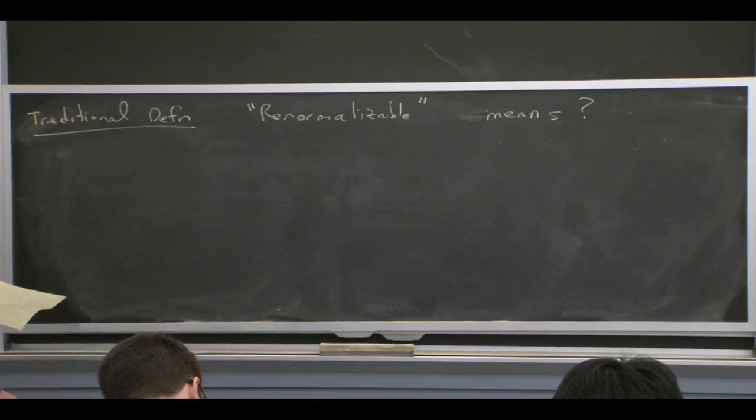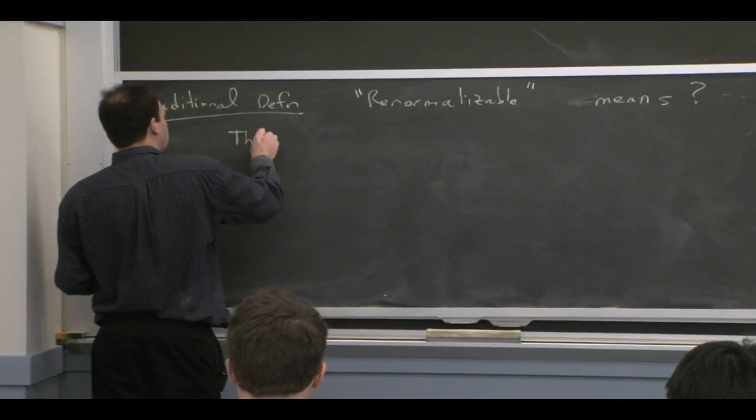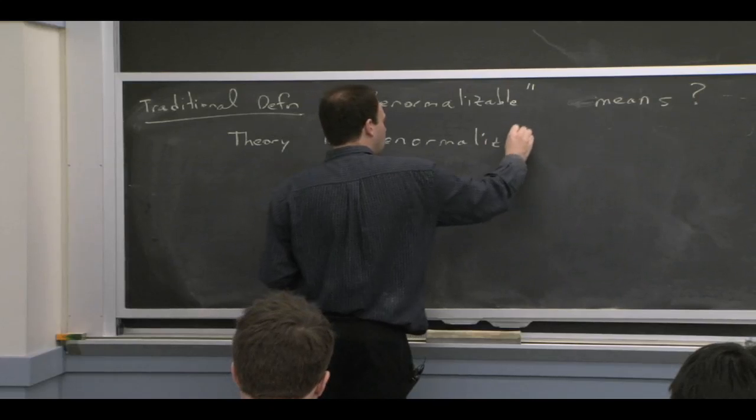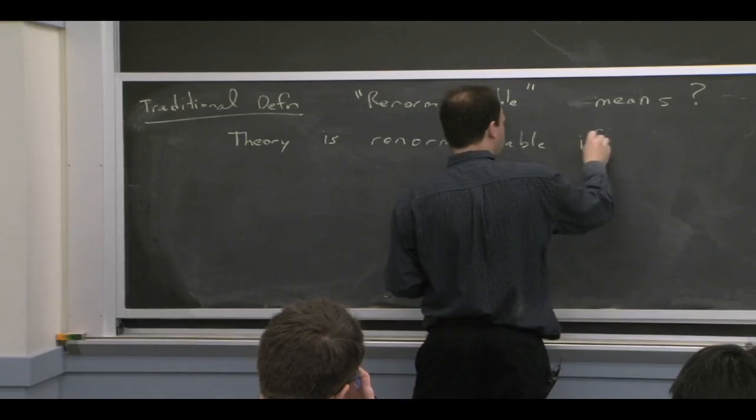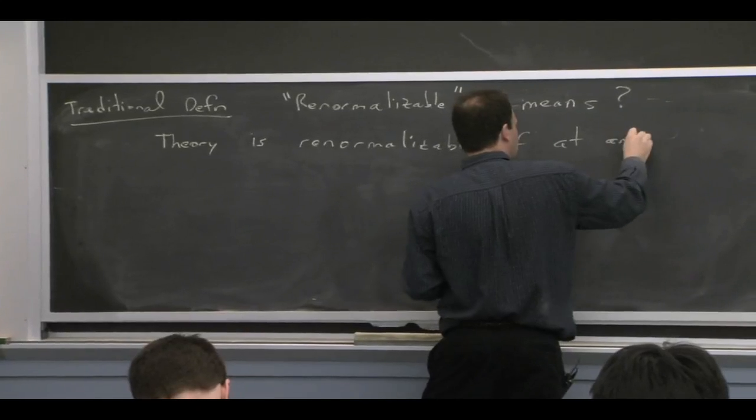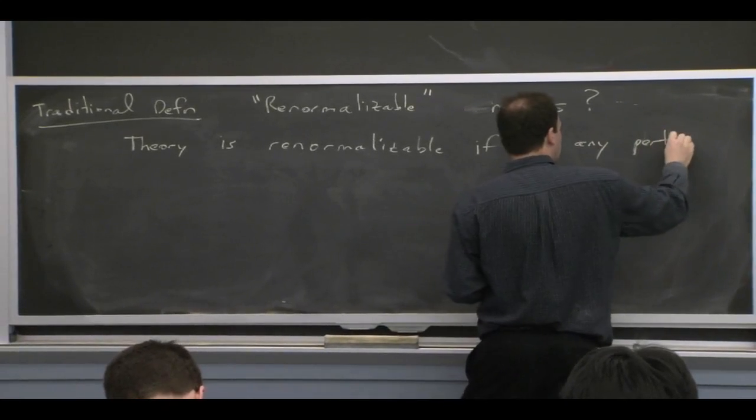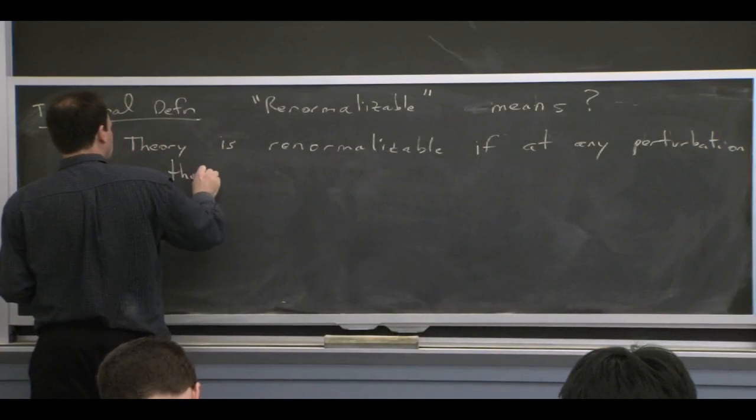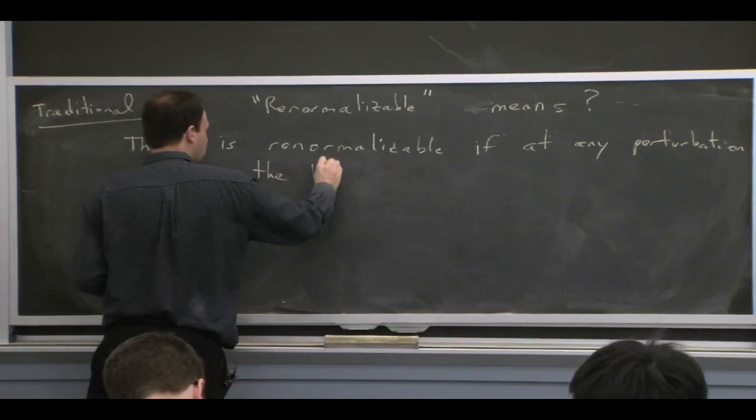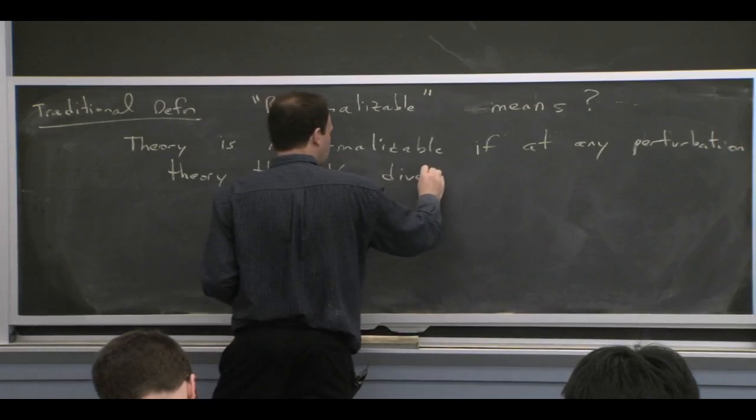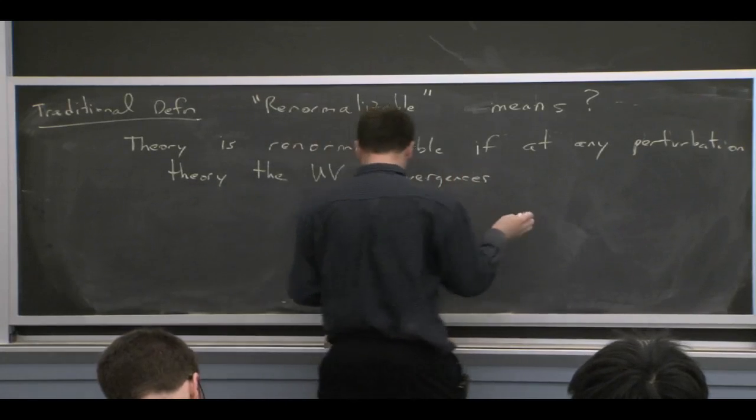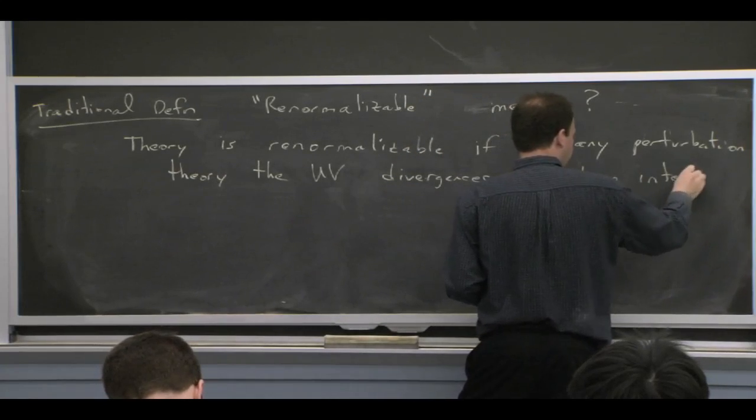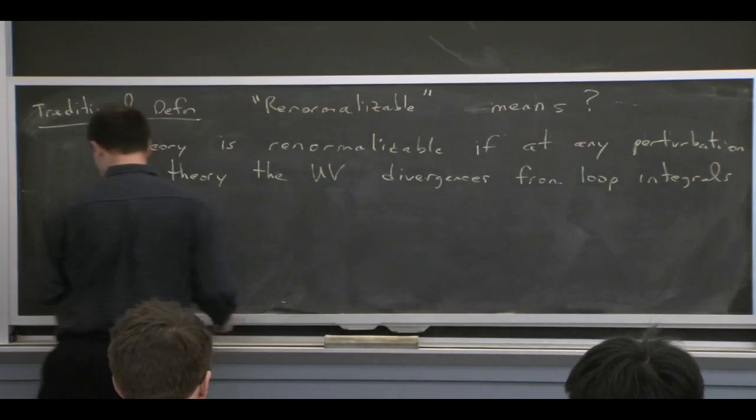What does renormalizable mean? So the traditional definition of what renormalizable mean would be the following. You would say a theory is renormalizable if at any order in perturbation theory in this quantum field theory, the UV divergences can be absorbed. So there's UV divergences from loop integrals. If they can always be absorbed into a finite number of parameters, then you'd say the theory is renormalizable.